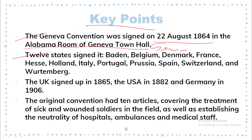Twelve states signed in: Baden, Belgium, Denmark, France, Hesse, Holland, Italy, Portugal, Persia, Spain, Switzerland, and Württemberg. The UK signed up in 1865, the US in 1882, and Germany in 1906.